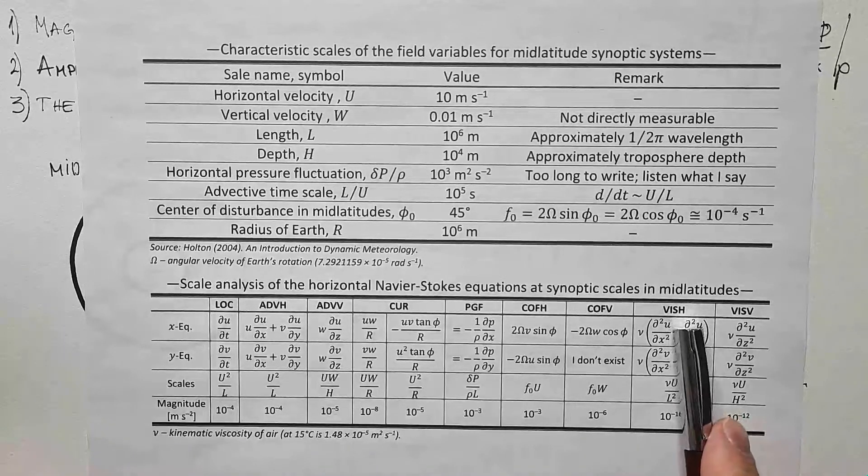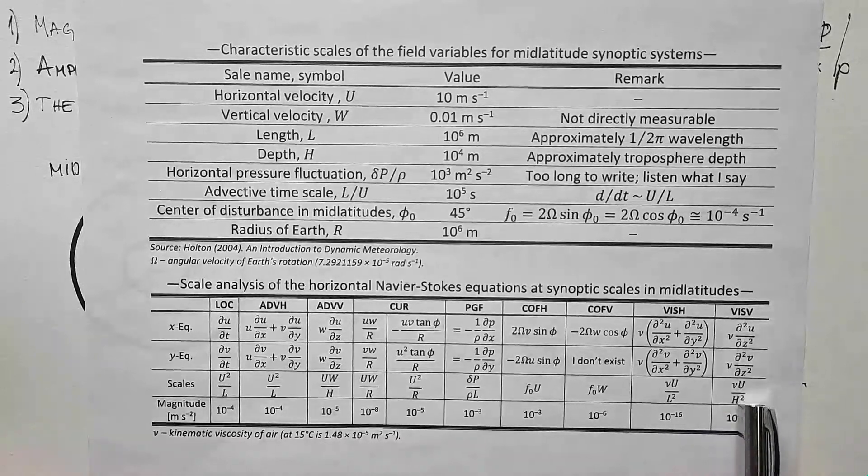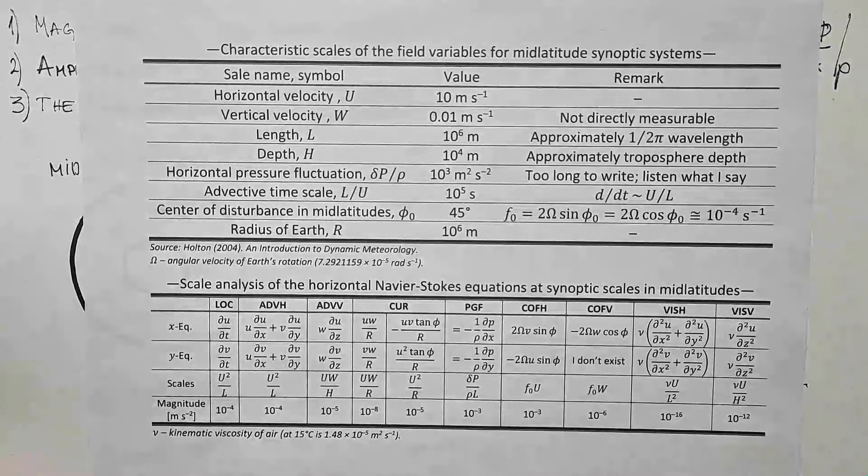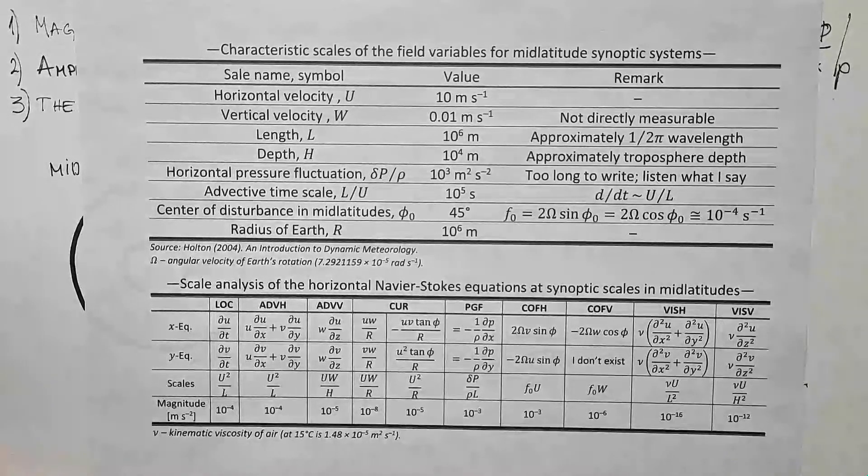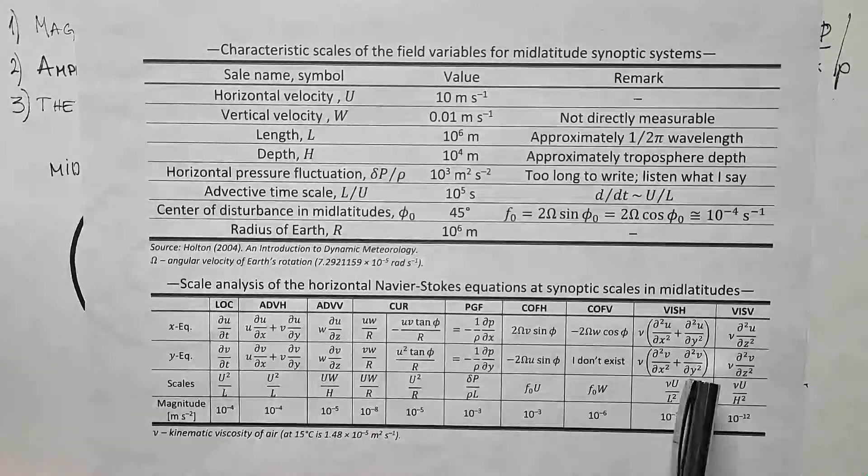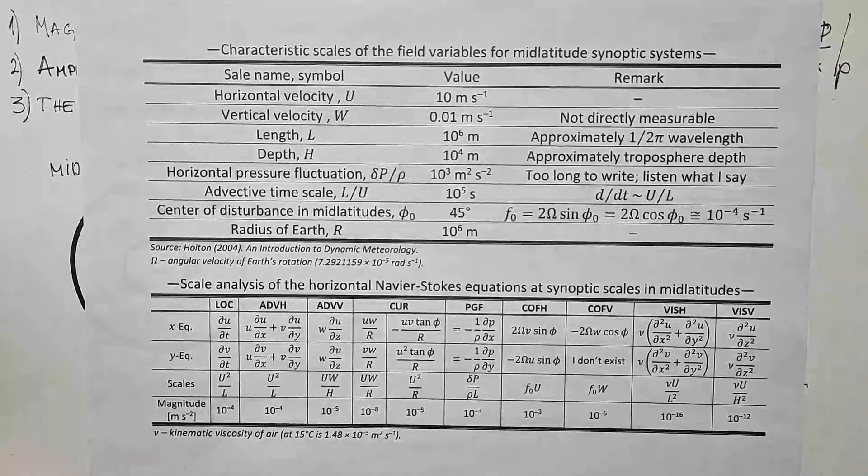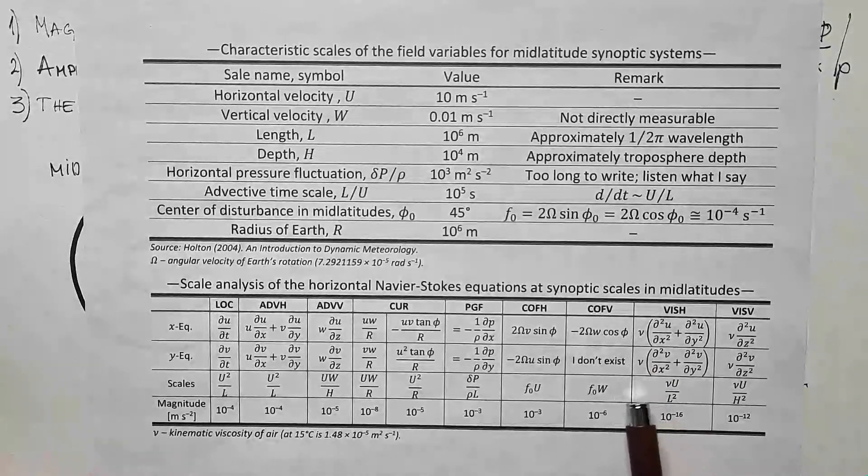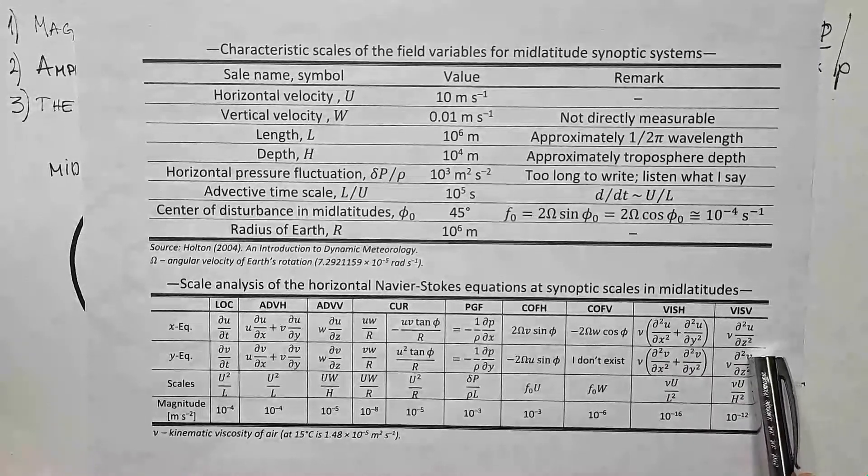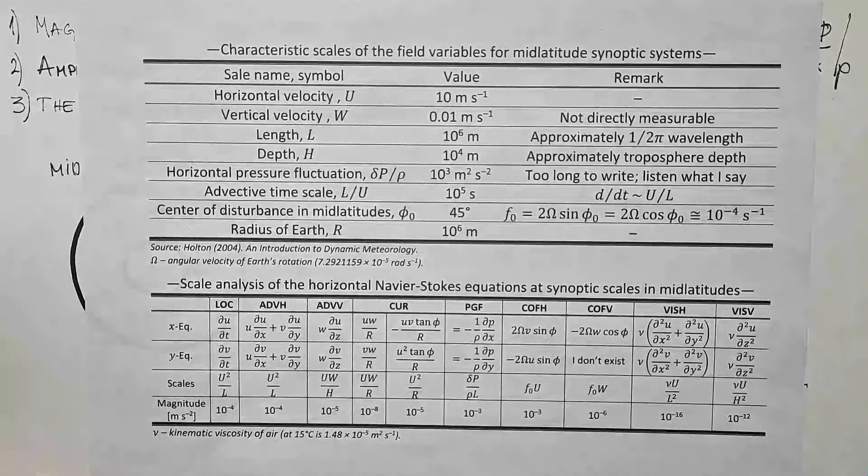And then we have viscous forces in horizontal direction, as well as viscous force in vertical direction, and they have very, very small magnitudes. Here is a small remark, this over here is nu, that's kinematic viscosity of air, whereas this inside is a component of velocity. So I don't want you to think that I don't know the viscosity terms. It just happened that this v and this nu are very similar, but these are different symbols, different variables.